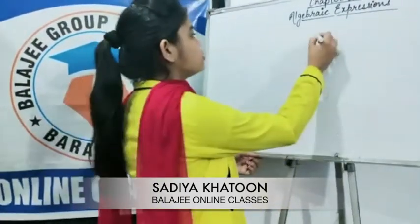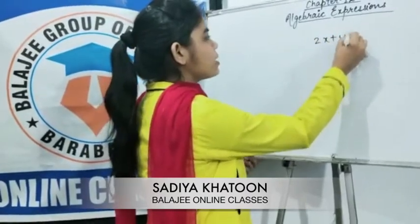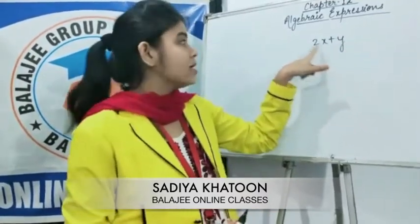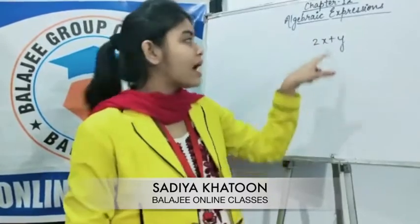An algebraic expression comprises of variables, constants, and then the operation — the sign which tells us which operation is to be performed. For example, if I write 2x plus y, this is an algebraic expression because x and y are the literals or variables, 2 is a constant term, and the plus sign tells us that the operation to be performed is addition.